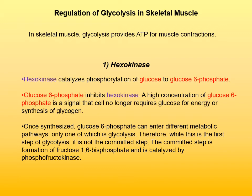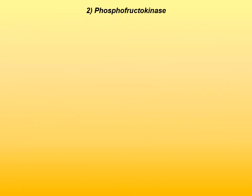The most important regulation point of glycolysis would be the next step, which is the committed step of the glycolysis metabolic pathway — that is the formation of fructose-1,6-bisphosphate, catalyzed by phosphofructokinase. Regulation of phosphofructokinase is the most important regulation point of glycolysis because that is the committed step of the glycolysis metabolic pathway.